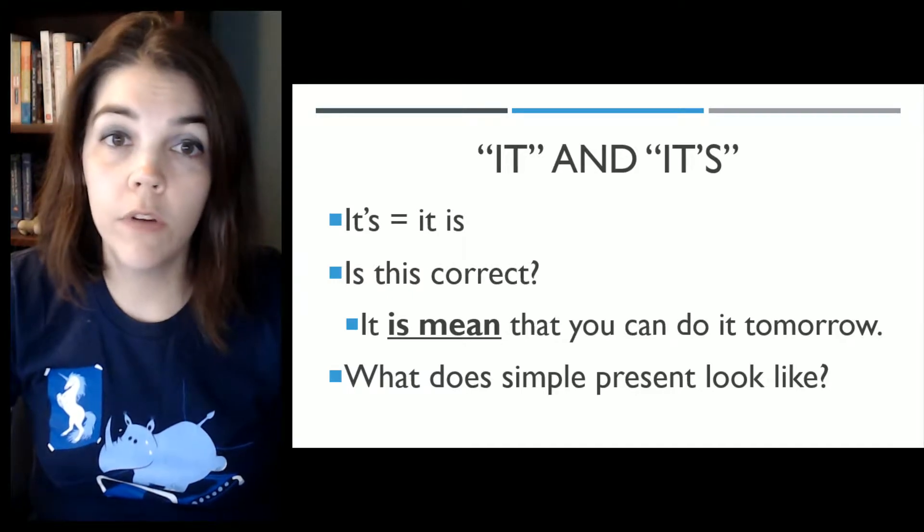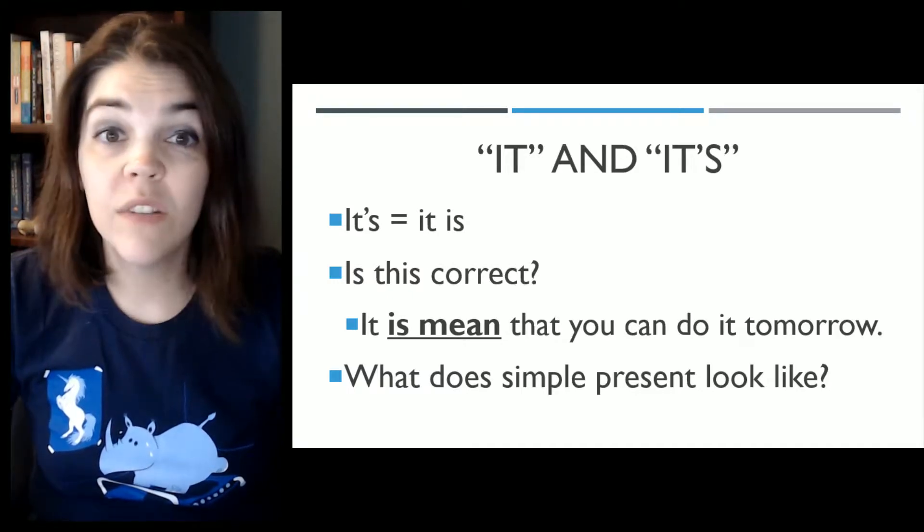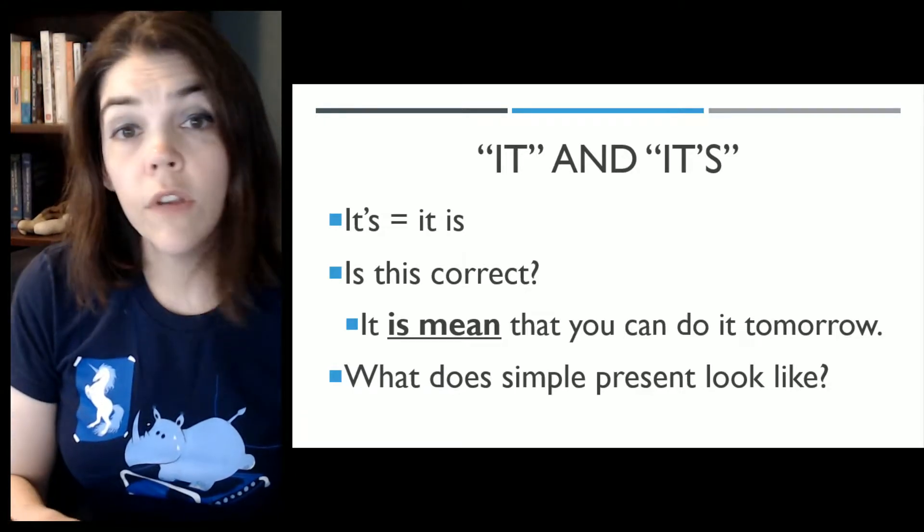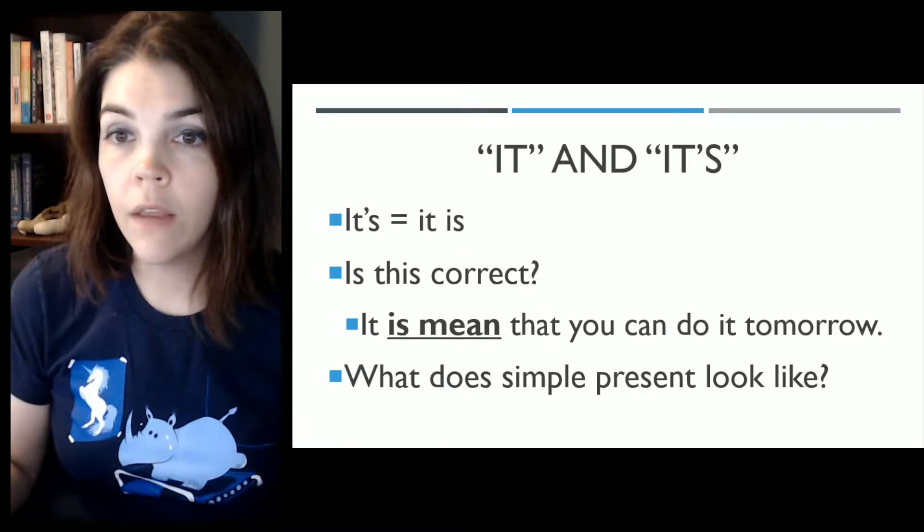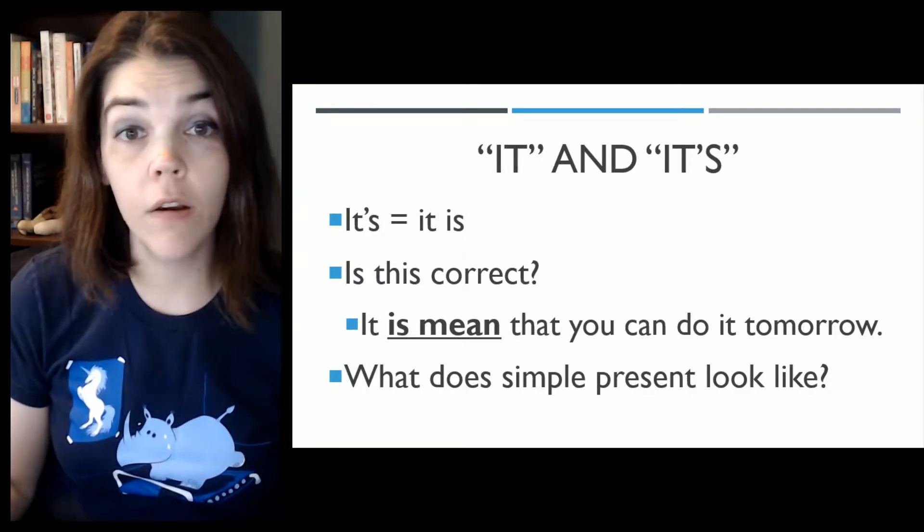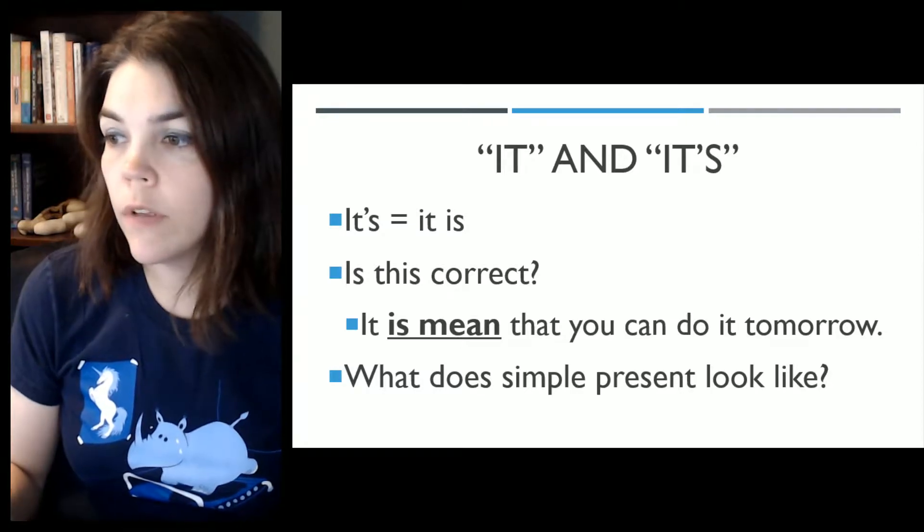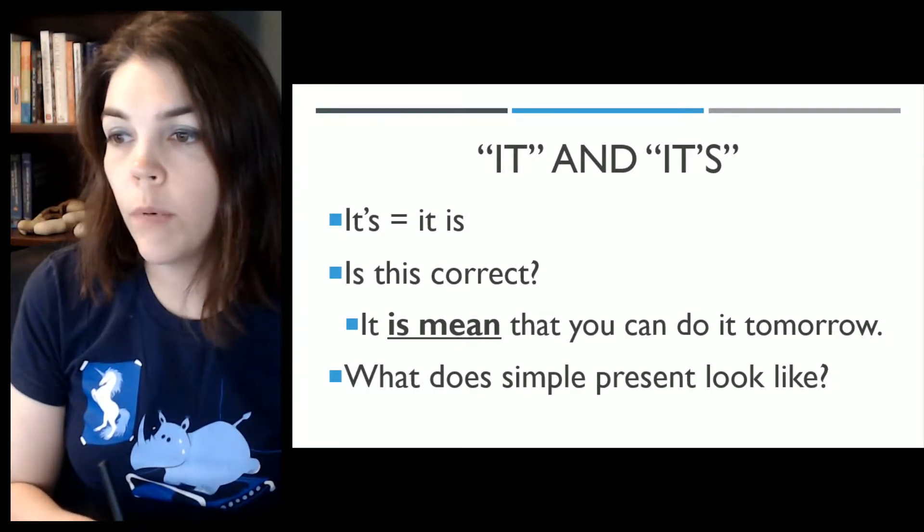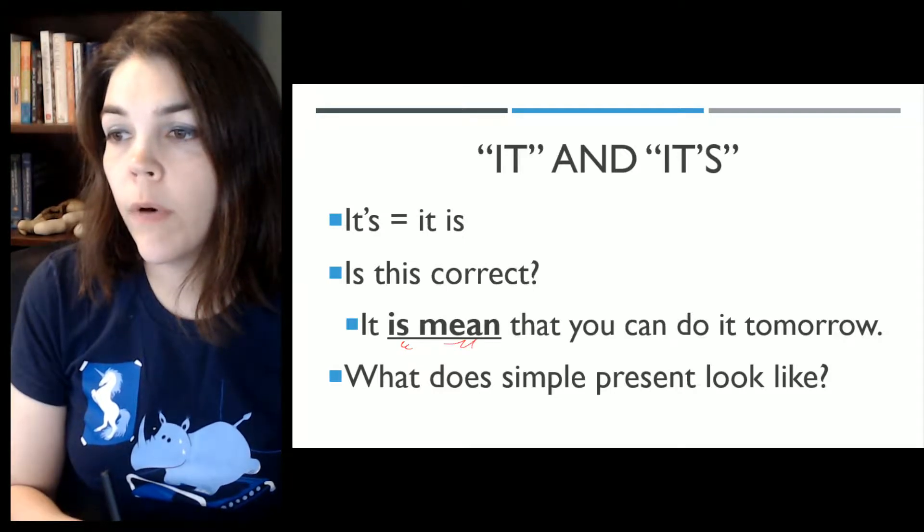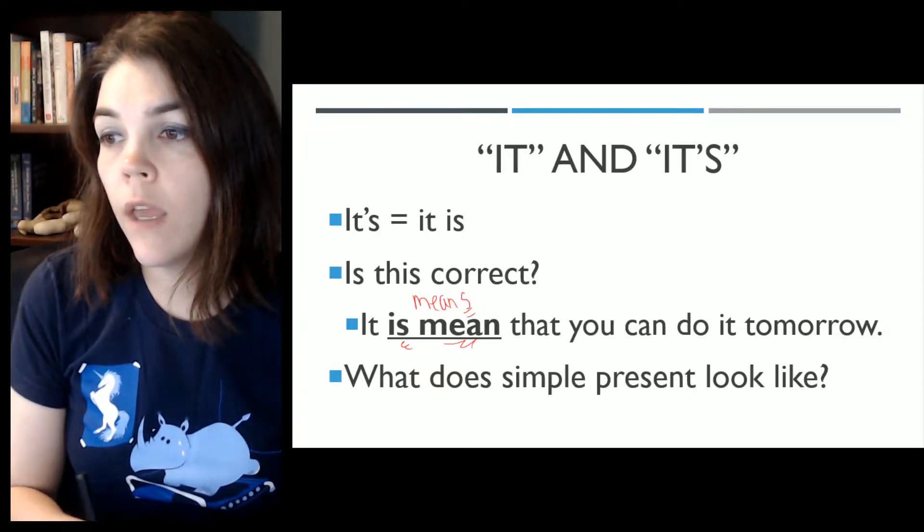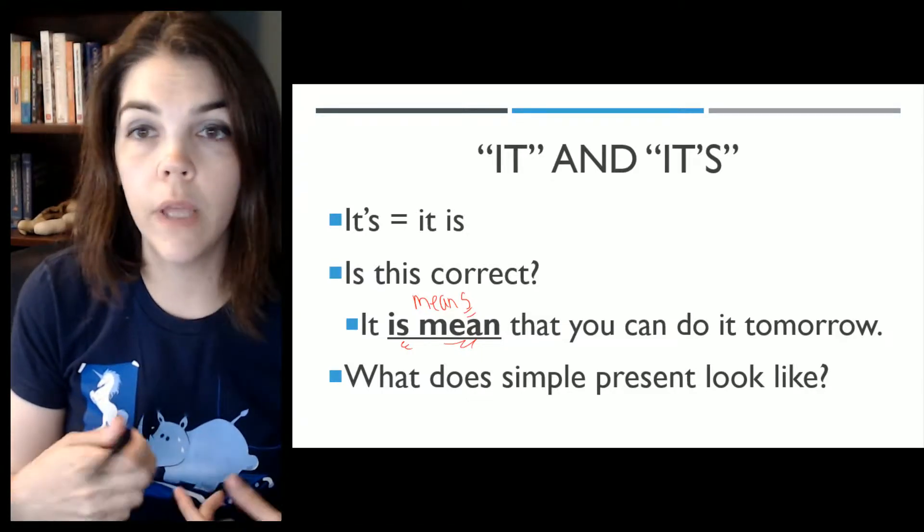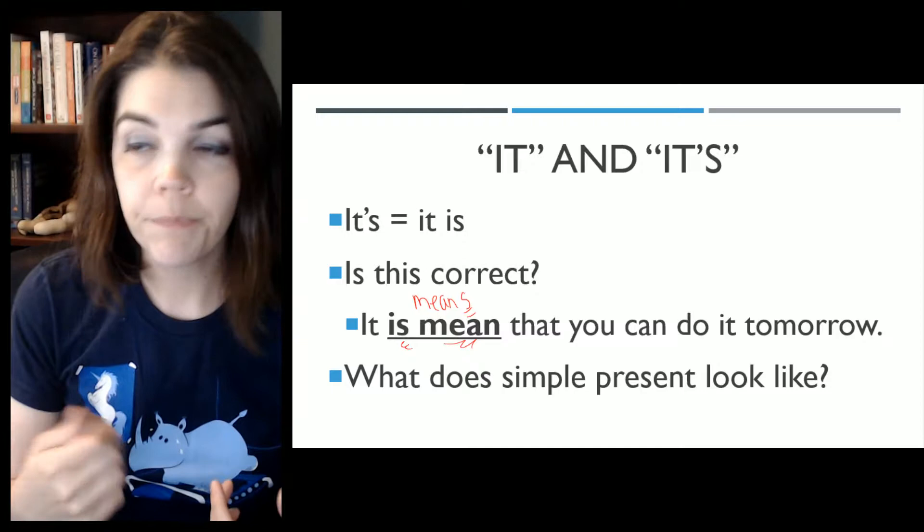So it's when there's an apostrophe, it means it is. So when we break that apart, is it correct to say it is mean that you can do it tomorrow? That is not correct, right? So what does the simple present look like? We know that the simple present doesn't look like this. Simple present has an S on the end if it's singular or it does not have an S if it's plural, like they or we.